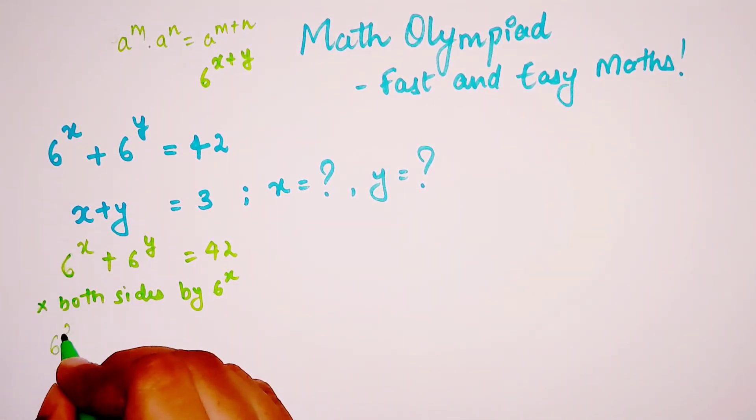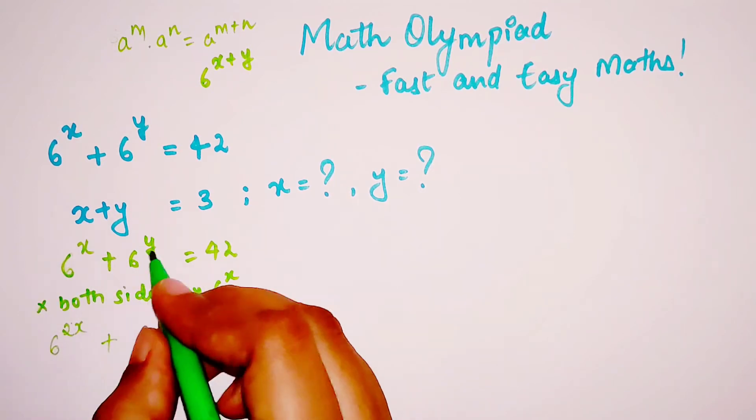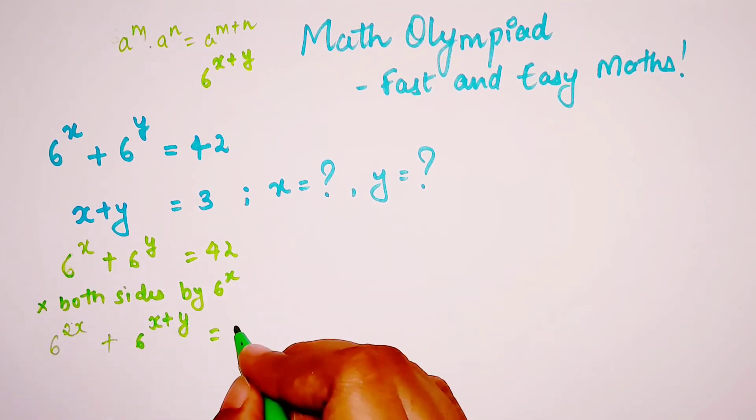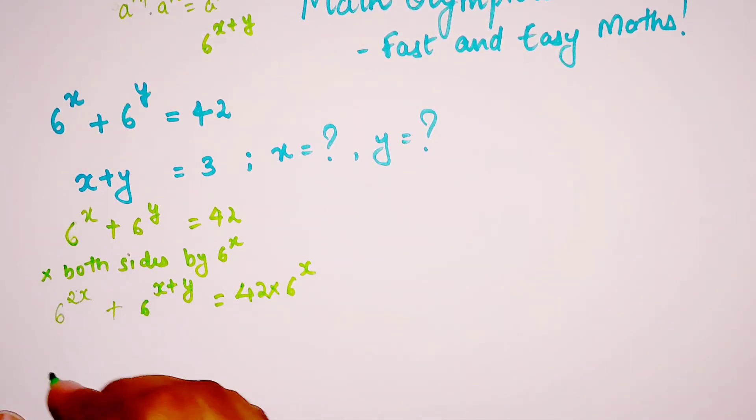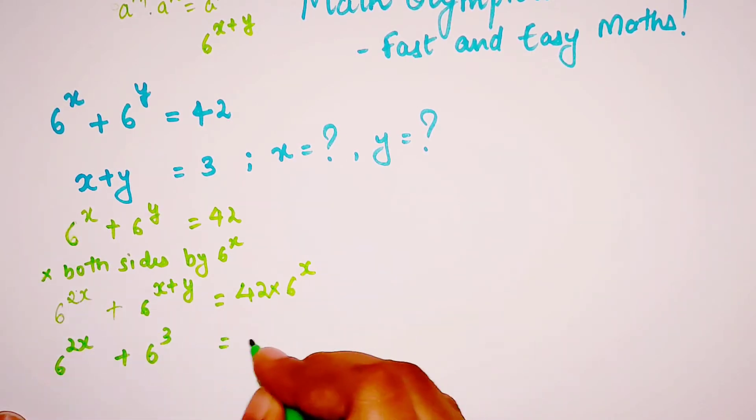When I do that, I get 6^(2x) + 6^x · 6^y, which gives me 6^(x+y), and this equals 42 · 6^x. So we get 6^(2x) + 6^3 = 42 · 6^x.